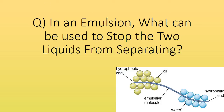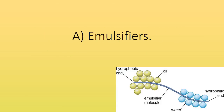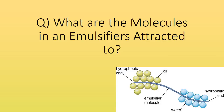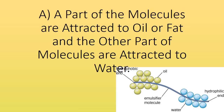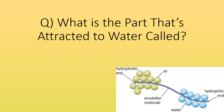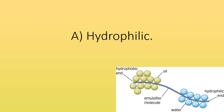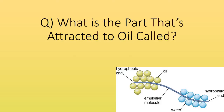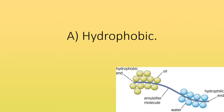In emulsions, what can be used to stop the two liquids from separating? Emulsifiers. What are the molecules in an emulsifier attracted to? Part of the molecules are attracted to oil or fat and the other part of molecules are attracted to water. What is the part attracted to water called? Hydrophilic. What is the part attracted to oil called? Hydrophobic.